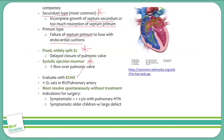An important concept is thinking about O2 saturations in different chambers in the setting of a heart defect. Oxygenated blood from the lungs in the left atrium flows down the pressure gradient into the right atrium, mixing with deoxygenated blood. Because of the oxygenated blood from the left side, there's an increased O2 saturation in the right atrium, and this remains true in the right ventricle and pulmonary artery as well. An ASD patient will have increased O2 saturation in the right heart chambers compared to a normal patient.